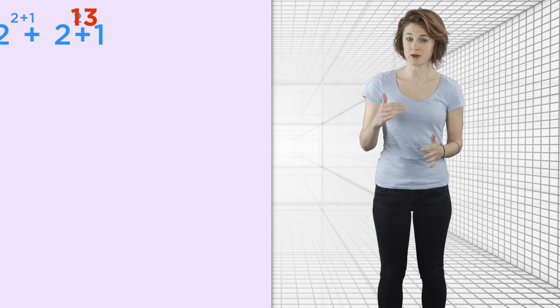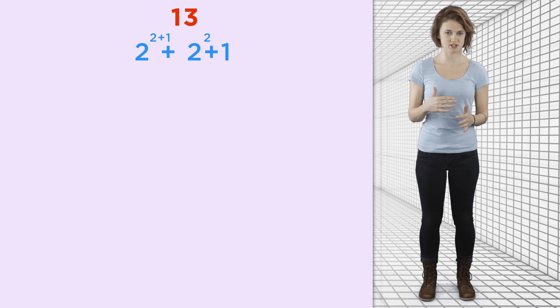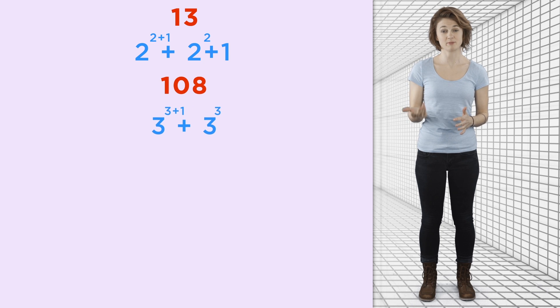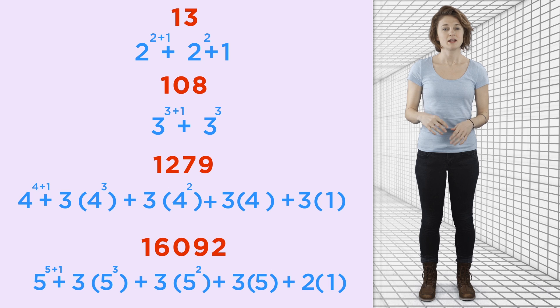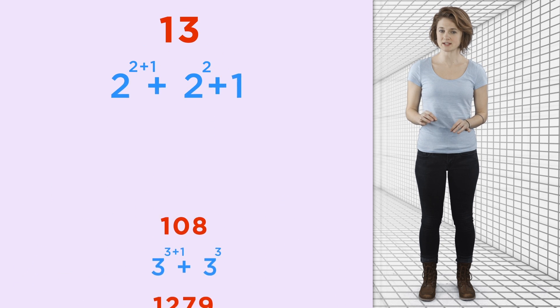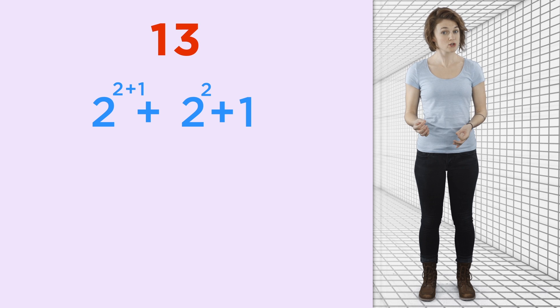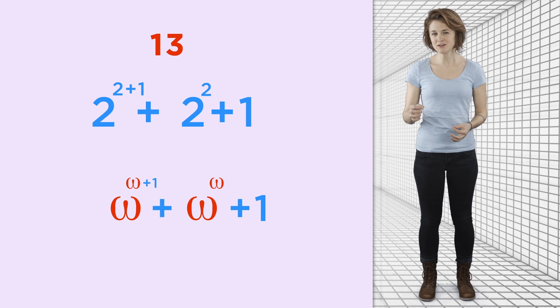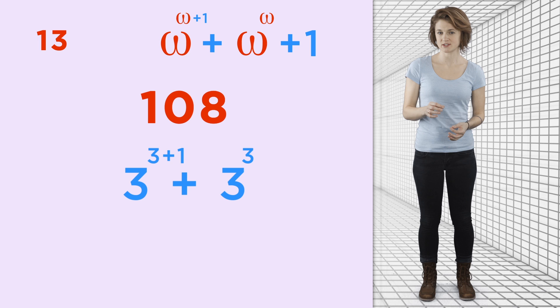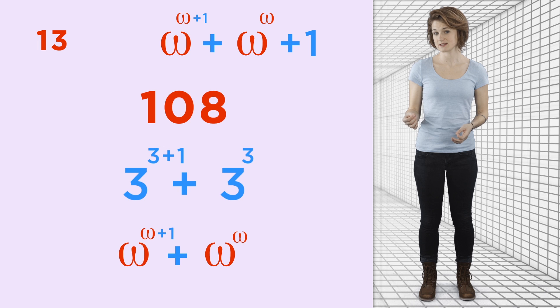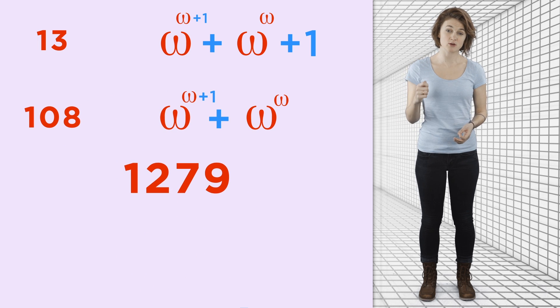To start the proof, let's write out our Goodstein sequence, starting with the number 13 in hereditary base notation. The first number is written in hereditary base 2, the second in hereditary base 3, and so on. Now, next to each number in the Goodstein sequence, we're going to write an ordinal. Here's how. The first number in the Goodstein sequence is written in hereditary base 2, so we replace all the 2's with omegas to get an infinite ordinal. The second number in the Goodstein sequence is written in hereditary base 3, so we replace all the 3's with omegas. Keep doing this to get a sequence of infinite ordinals.